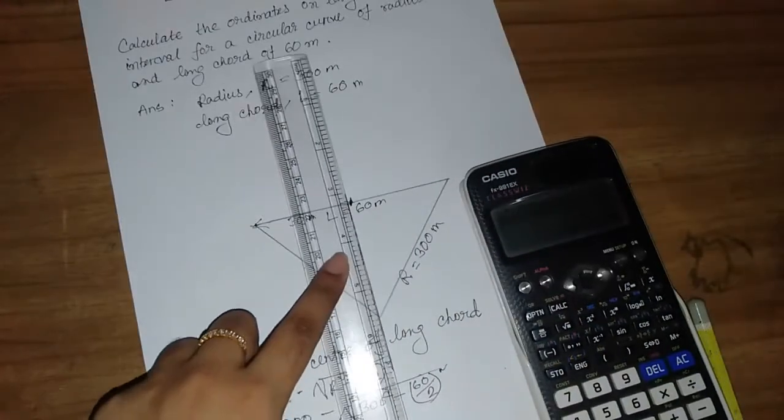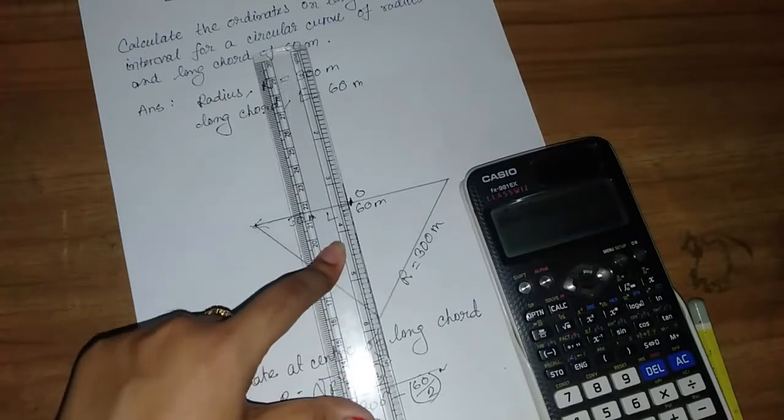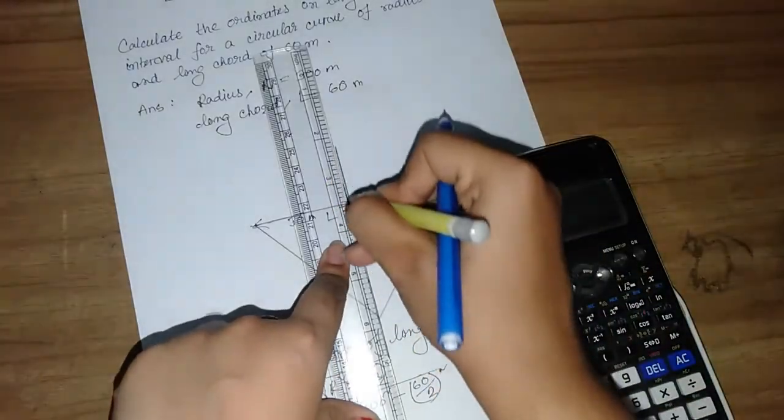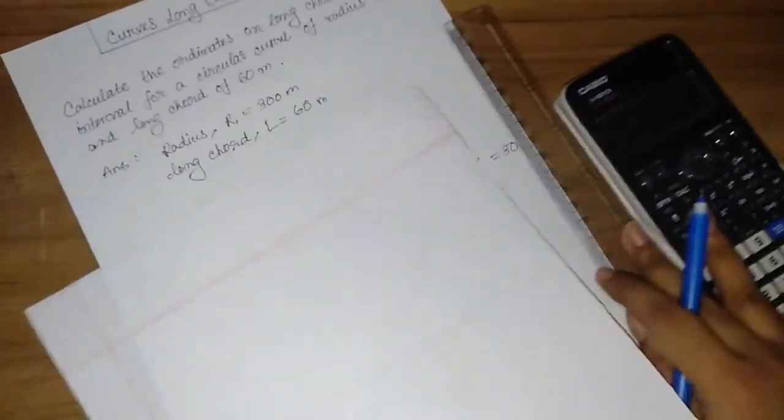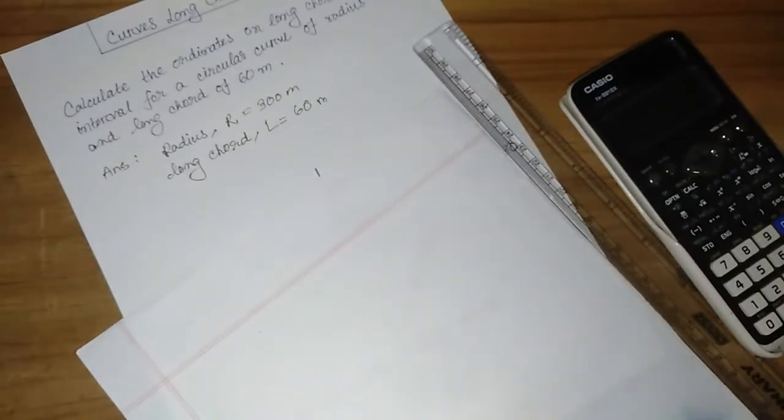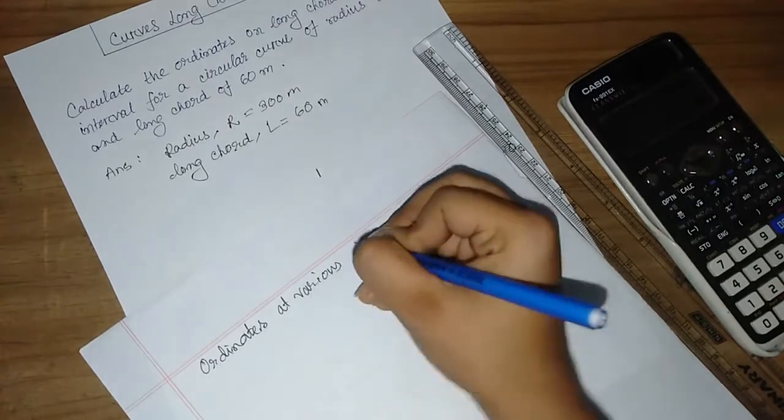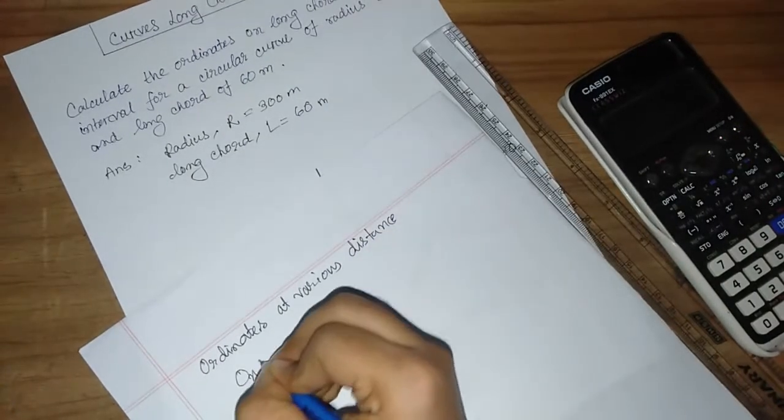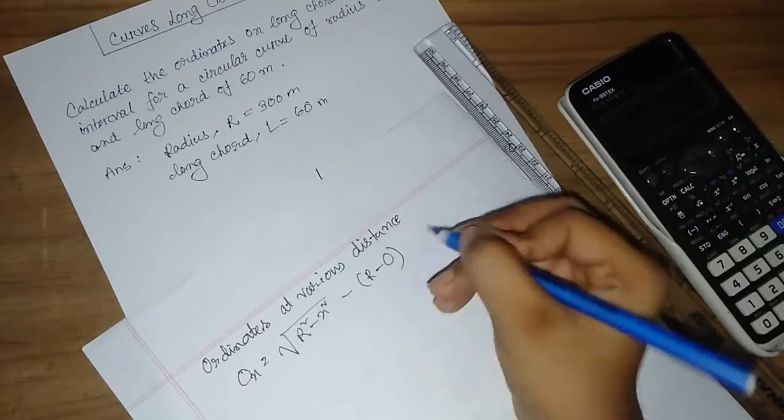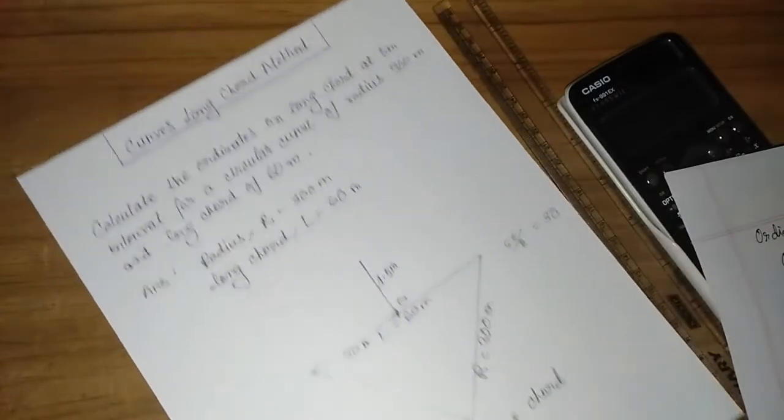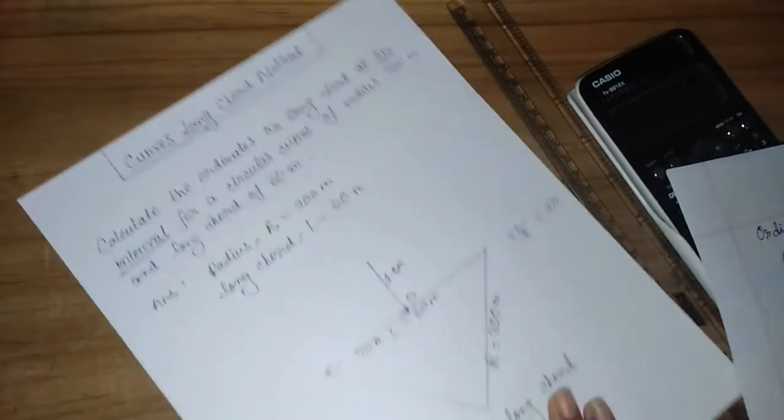Now we need to find ordinates at various distances. The formula is: Ox = square root of (R² minus x²) minus (R minus O₀). The problem asks for 5 meter intervals, so we need to calculate ordinates at these intervals.